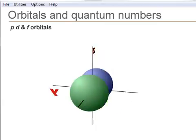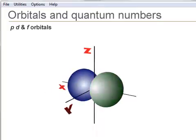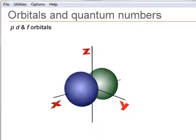S-orbitals have L equals 0, P-orbitals have L equals 1, D-orbitals have L equals 2, and F-orbitals have L equals 3.